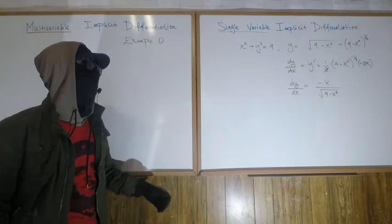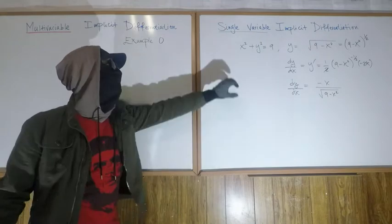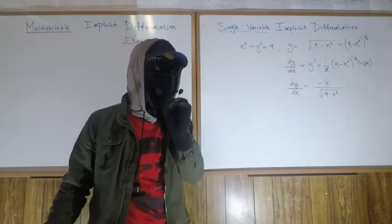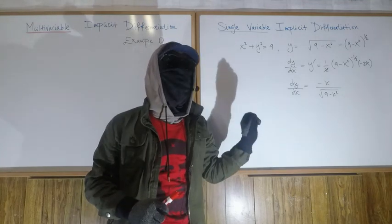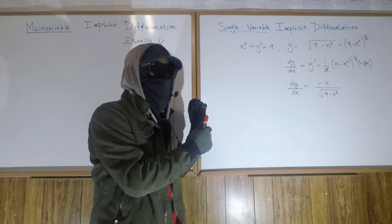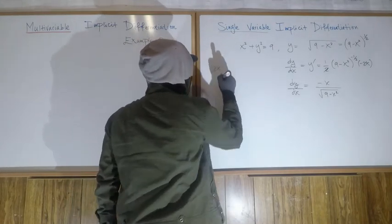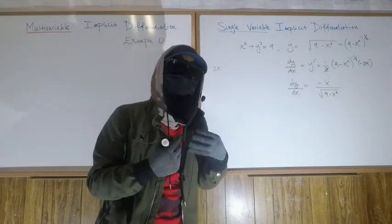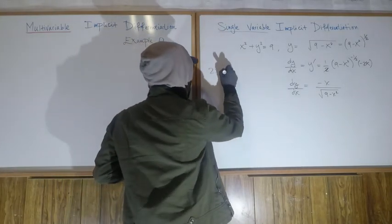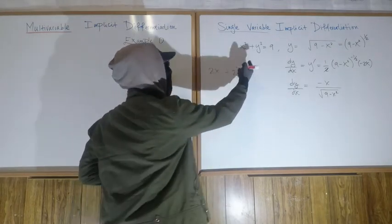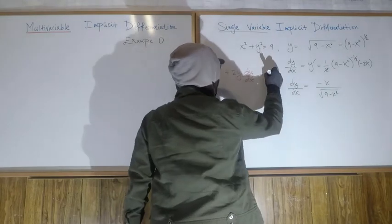We could also find dy/dx using implicit differentiation, since the relationship between y and x was defined implicitly there. The rule for single-variable implicit differentiation: every time you take the derivative of a term that has a y, you must multiply by dy/dx via the chain rule. Also, take the derivative on both sides of the equal sign. Those are the two rules.